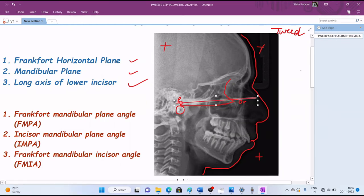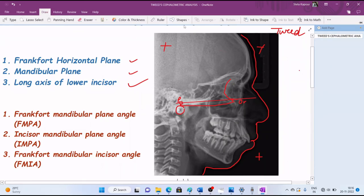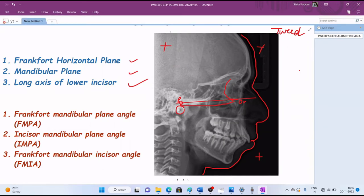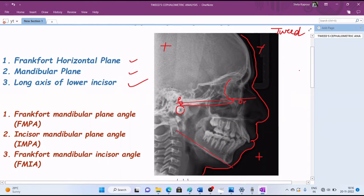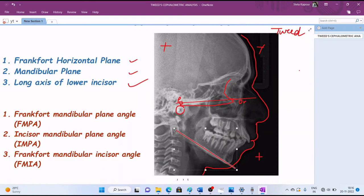Next is the mandibular plane. We know for a fact that different analyses use different mandibular planes. For Tweed, you can remember it by T and T. For Tweed, the tangent passing from the lower border of the mandible is considered the mandibular plane. This is our mandibular plane in Tweed's analysis.